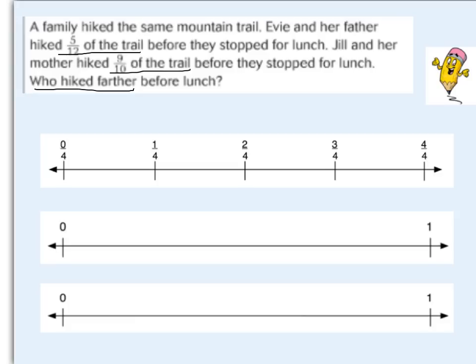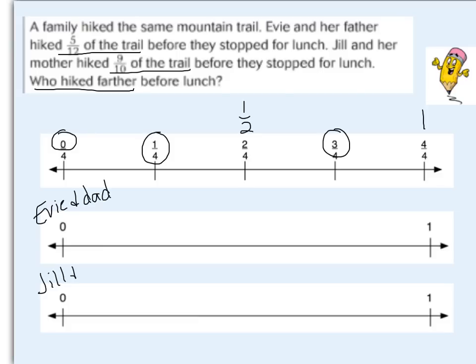We're going to use those benchmarks of zero, one-fourth, one-half — which is halfway between zero and one, and two-fourths is equivalent to one-half — three-fourths, and a whole. If I have four-fourths, that is the same thing as one. So we're going to be comparing five-twelfths, which is Evie and dad, to nine-tenths, which is Jill and her mom.